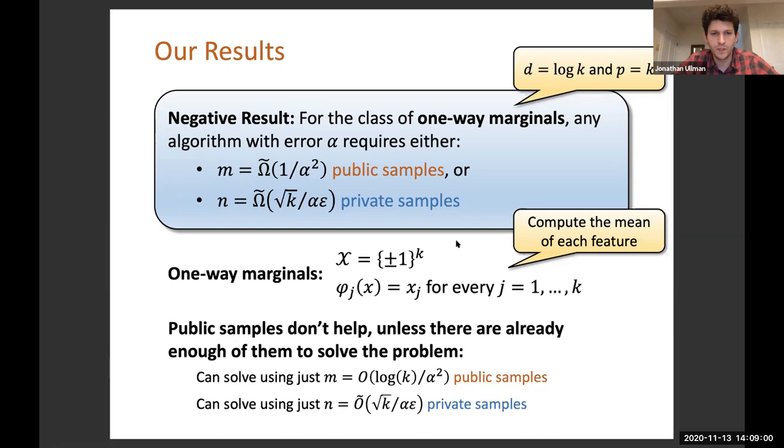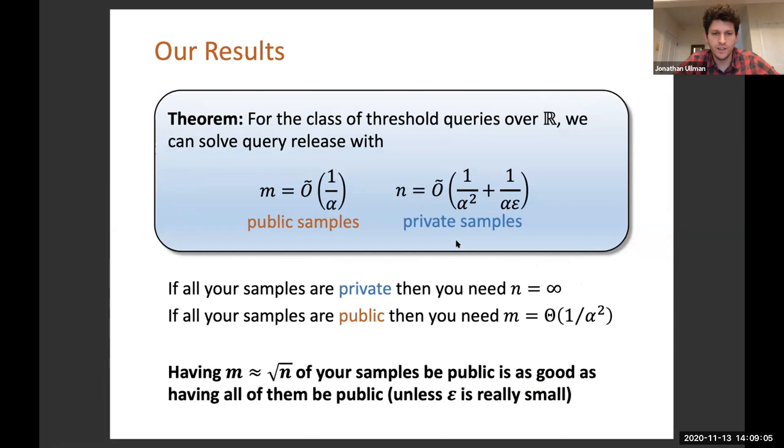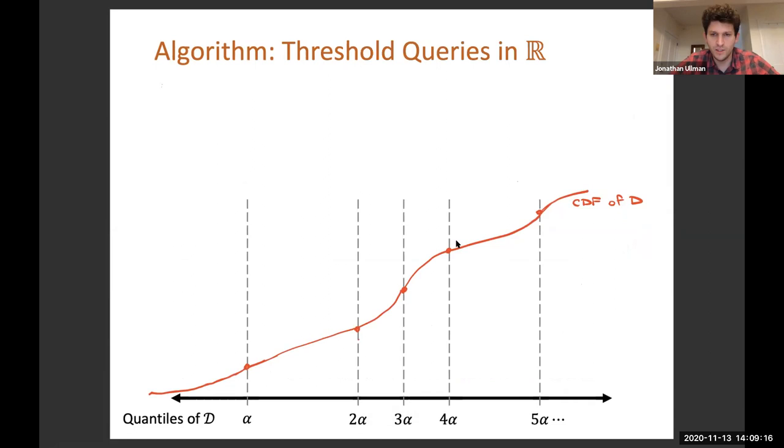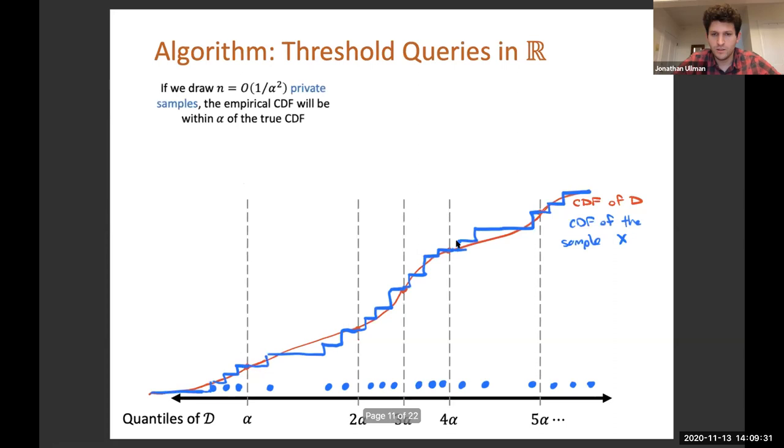I've been just talking about results. Let me quickly go over this example of threshold queries and how the algorithm works to give you a sense of how public data can help. I'm going to talk about threshold queries over the reals, and this is equivalent to just estimating the cumulative distribution function. Imagine you have some distribution, and this red line is the CDF. If you draw about 1 over alpha squared private samples, then the CDF of the data will approximate the CDF of the population. So we can focus on approximating this blue CDF of the data that we have.